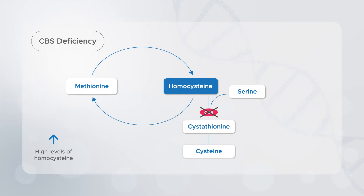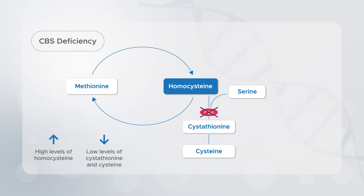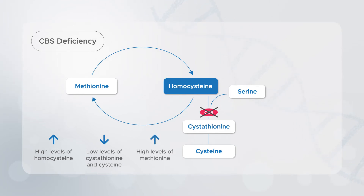It can cause low levels of cystathionine and cysteine in the blood, because homocysteine can't be processed to make these two amino acids. And it can cause high levels of methionine in the blood, because unused homocysteine is converted back to methionine and starts to build up.